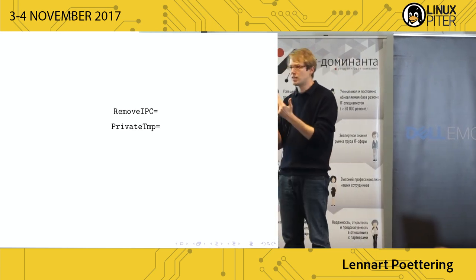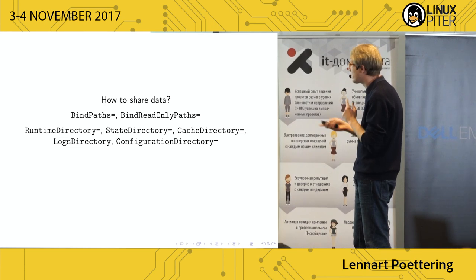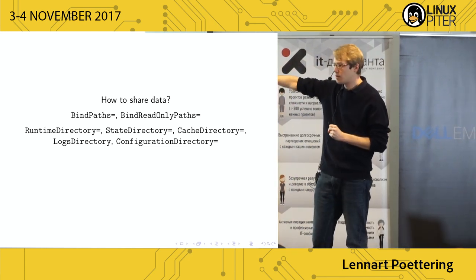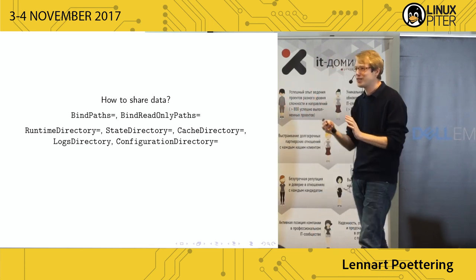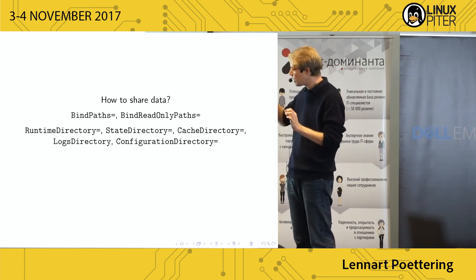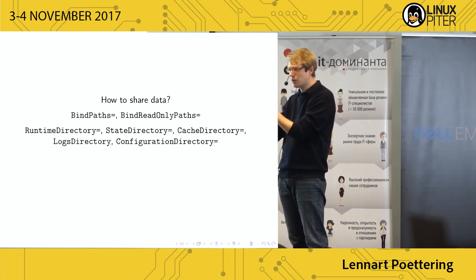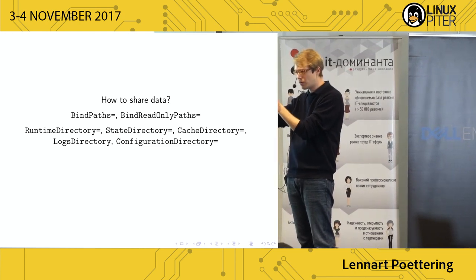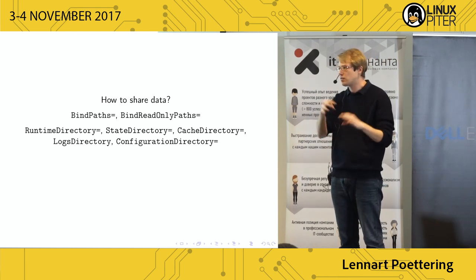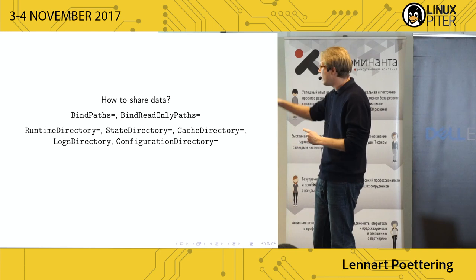Both PrivateTmp and RemoveIPC are implied when you turn on DynamicUser. This is still limiting because you don't have persistent data — /tmp and /var/tmp are not persistent. The way out is the directory settings from earlier: RuntimeDirectory, StateDirectory, CacheDirectory, LogsDirectory, and ConfigurationDirectory. RuntimeDirectory behaves similarly to temp: the directory is created at start, owned by the service's user, and automatically removed when the service goes down.